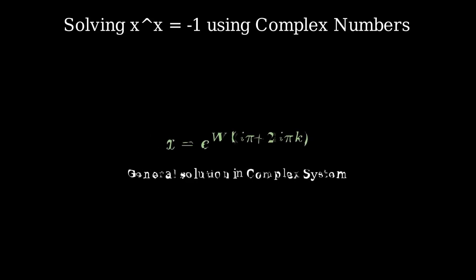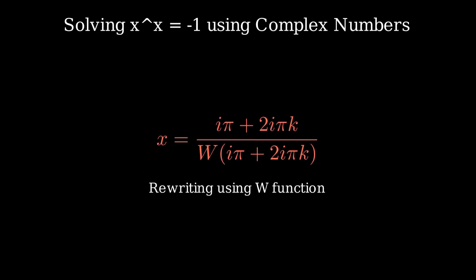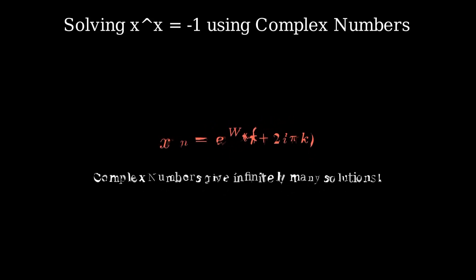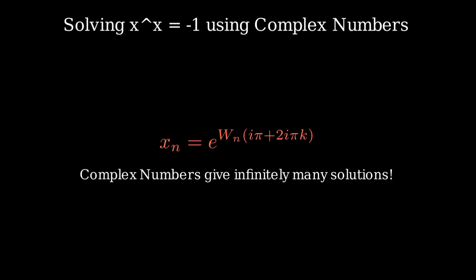Finally, solving for x, we exponentiate both sides, giving us x equals e raised to the power of W of i times pi plus 2 times i times pi times k. This is the general solution in the complex system. And the key takeaway: because of that extra term with k, this equation actually has infinitely many solutions — one for each whole number value of k.